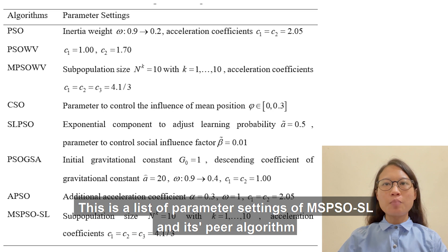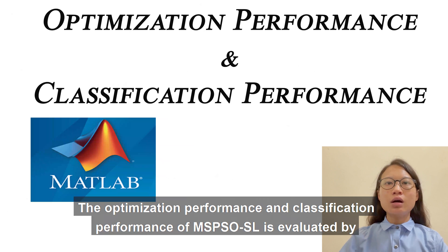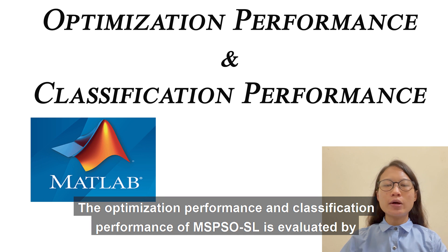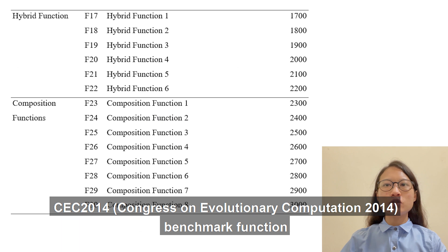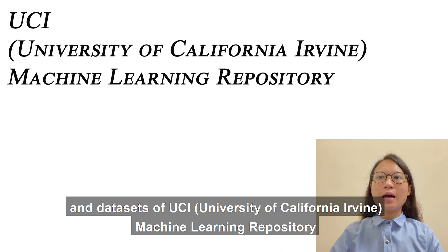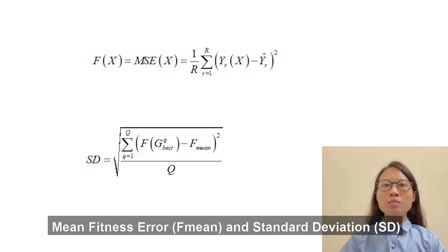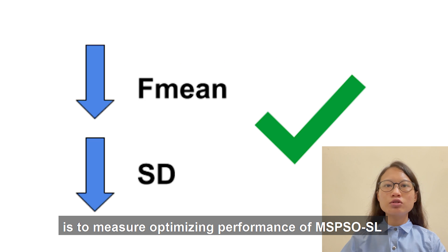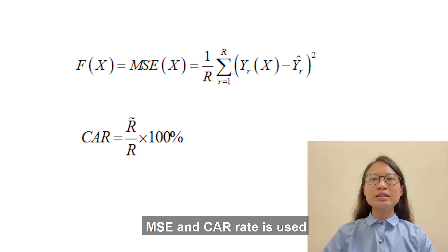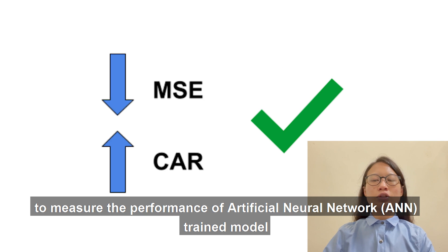This is a list of parameter settings of MS-PSO-SL and its peer algorithms. The optimization performance and classification performance of MS-PSO-SL is evaluated using the CEC 2014 benchmark function and datasets from the UCI machine learning repository. Mean fitness error and standard deviation are used to measure optimization performance, while MSE and classification rate (CR) are used to measure the performance of the ANN trained model.